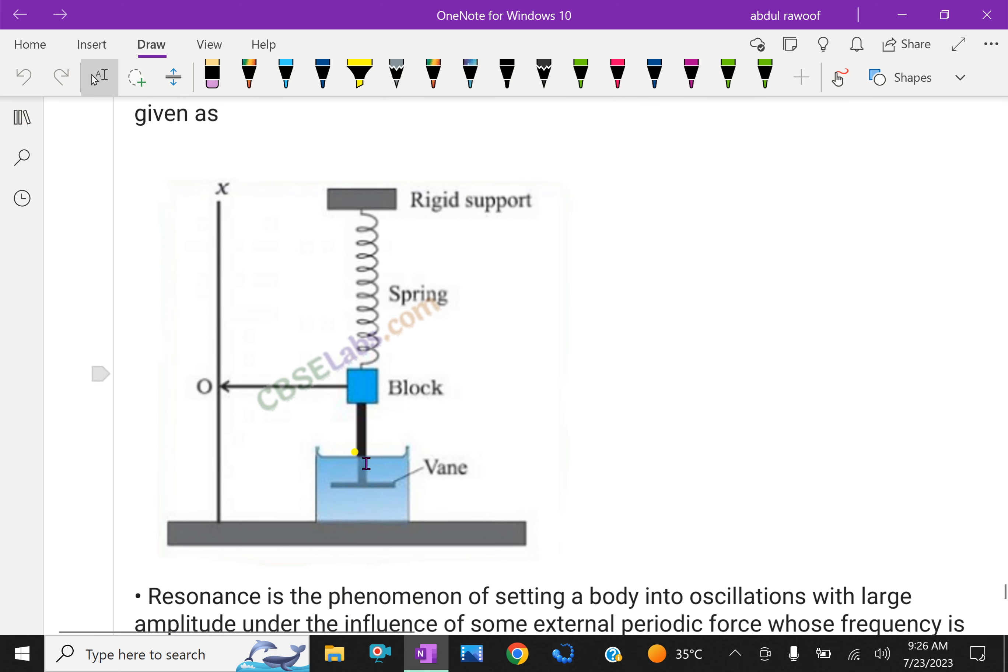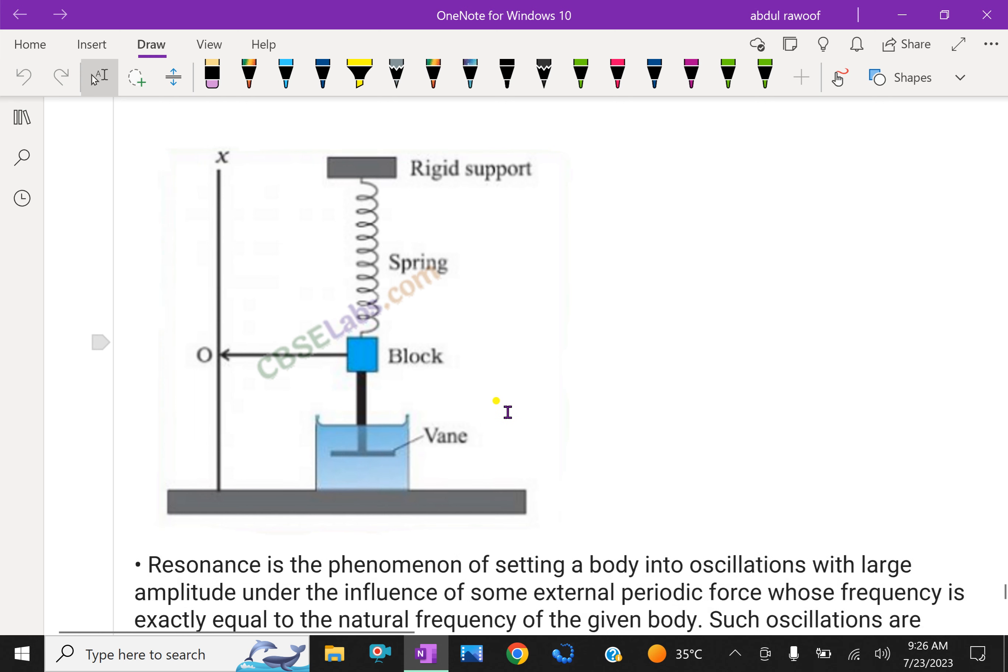The external force which causes forced oscillation is of sinusoidal nature. Look at here—suppose that block is further connected with the damped liquid connected with the plate, which is damped.